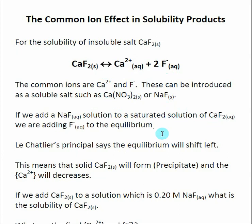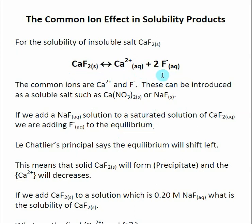If I were to add a common ion — in this case F⁻ in the form of sodium fluoride — into that solution, Le Chatelier's principle says the equilibrium would shift to the left. By adding F⁻, a product, to compensate, the equilibrium shifts left, using up Ca²⁺ and forming calcium fluoride. So if we had a saturated solution and started adding F⁻, we would expect a precipitate to form.